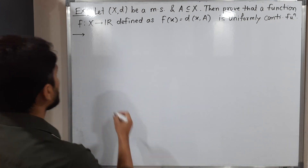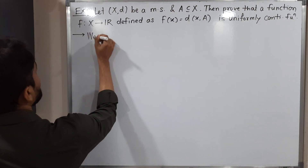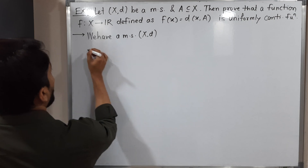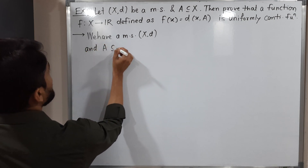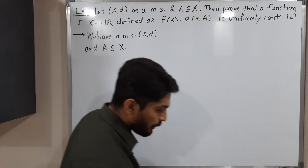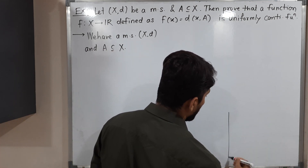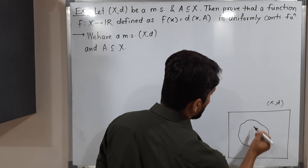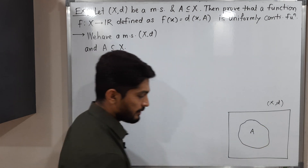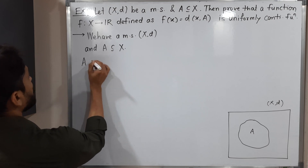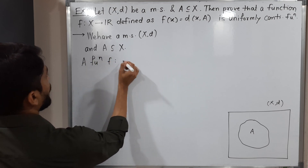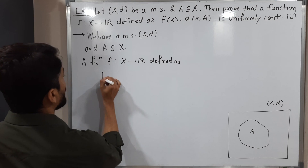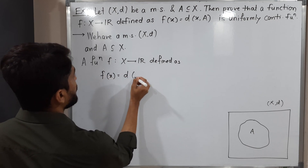Let us start with the given information. We have a metric space X,d, and A is a subset of X. I will draw a diagram so we can easily understand the meaning of it. This is the metric space X,d we have. We have some set A which is a subset of X. We have a function f from X to ℝ defined as f(x) = d(x,A).